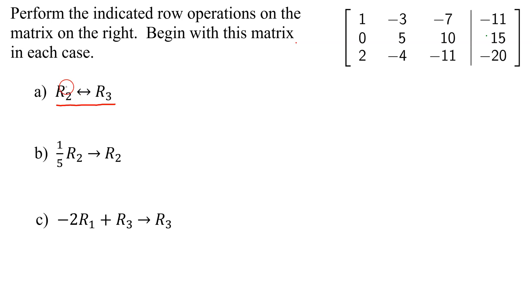Here is a matrix, it's an augmented matrix, and here are the instructions for part A. Well, what does this mean? If you see a capital R with a subscript of 2, it's indicating row 2.